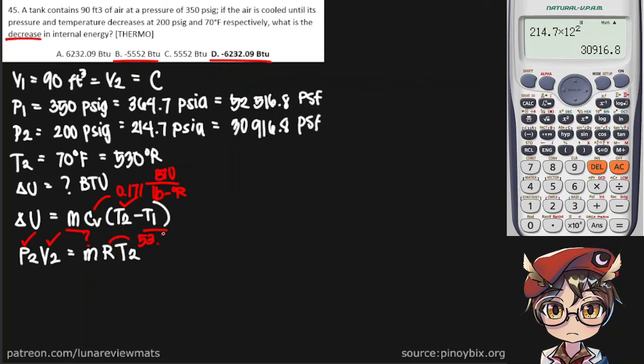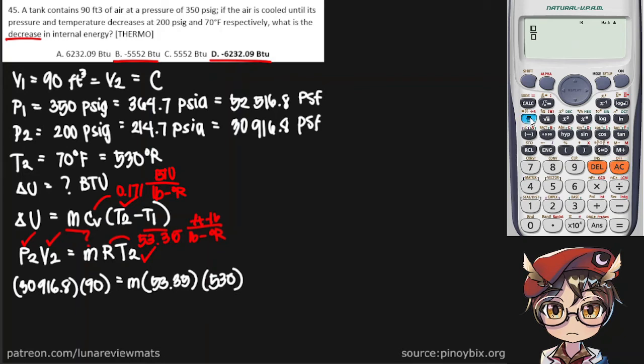We know R is 53.35 foot pound per pound mass degrees Rankine. And of course, T2 is given to us. Now we can simply start putting our values in. We are going to use pounds per square foot here because we're using feet on the rest of the equation. So P2 is 30,916.8. V2 is 90. M is our mass. 53.35 for our gas constant. And of course, our absolute final temperature.